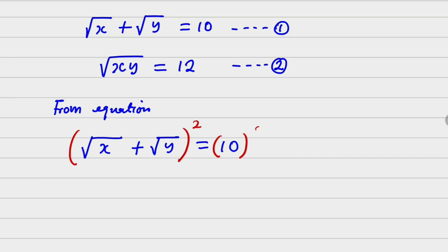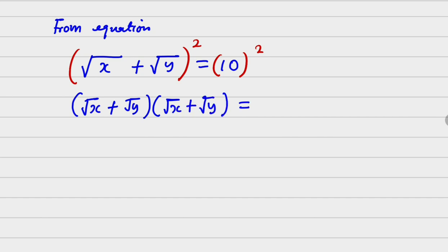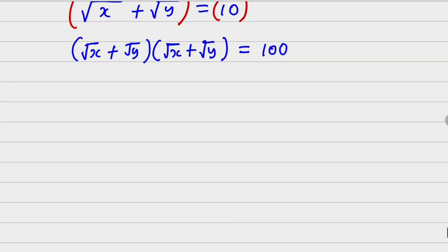We get (√x + √y) multiplied by (√x + √y), and this equals 10 times 10, which is 100. Expanding this, √x times √x gives us x. In case you don't understand: √x times √x equals √(x²), which cancels to give x. That's exactly what has happened.